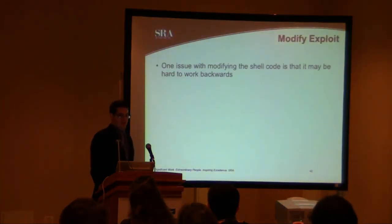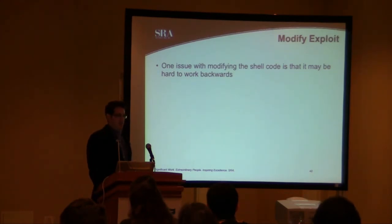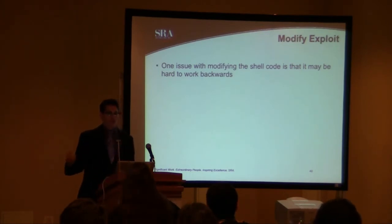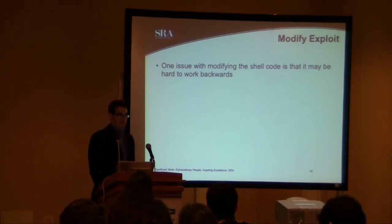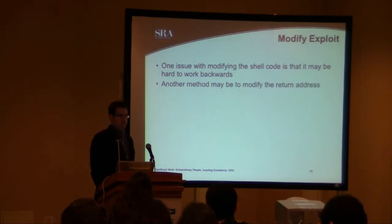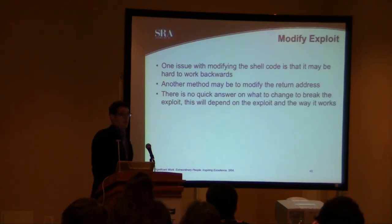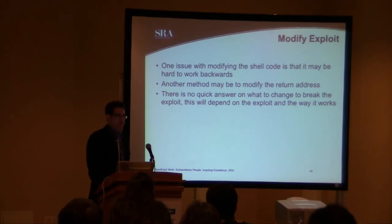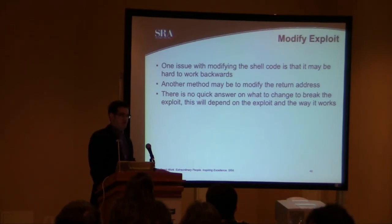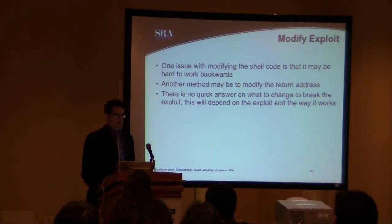We can also modify the exploit. One issue with modifying the exploit code is that it may be hard to work backwards — sometimes if it jumps to that arbitrary memory location, you don't know where it jumped from; the call stack is broken or something like that. Another method might be to modify that return address. There's no quick answer on what to change when dealing with a functional exploit that doesn't stop in a debugger. It'll depend on the exploit and how it works, so you have to experiment a little bit. That's where being able to reload the snapshot in a VM is pretty helpful.